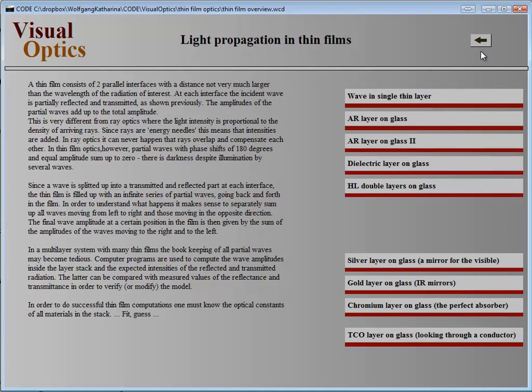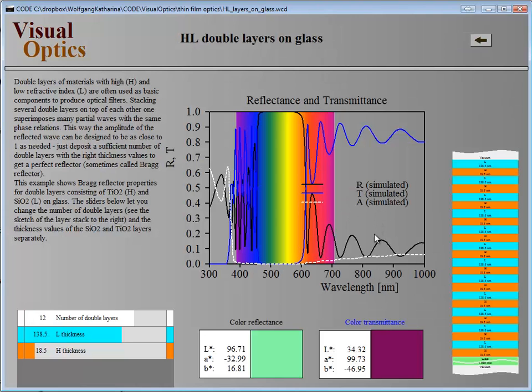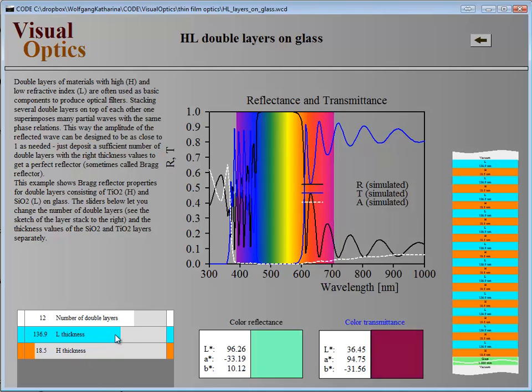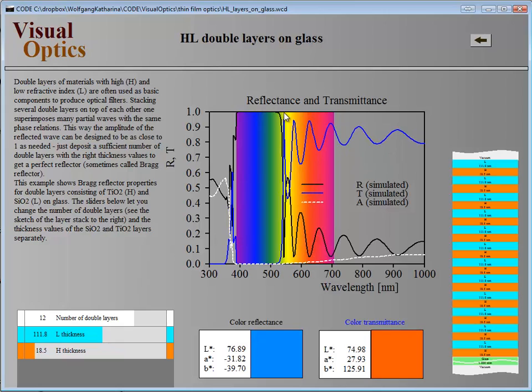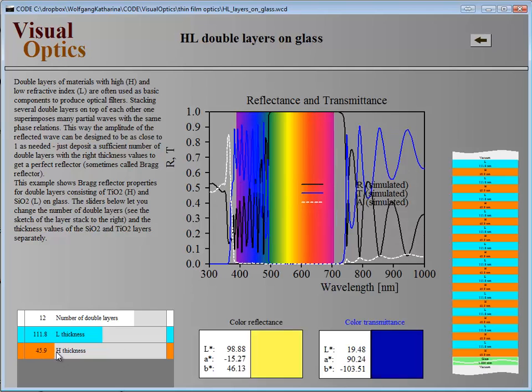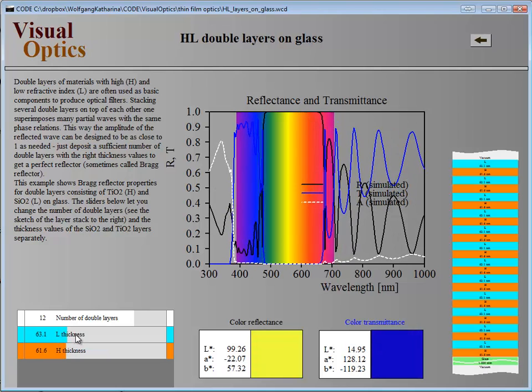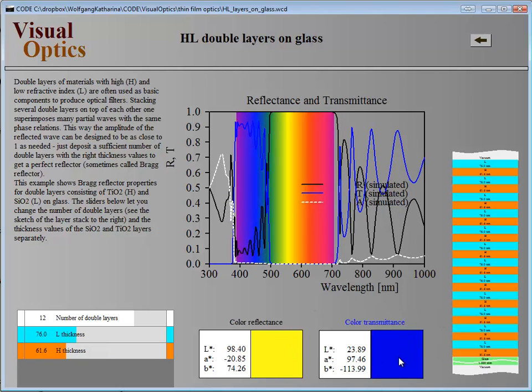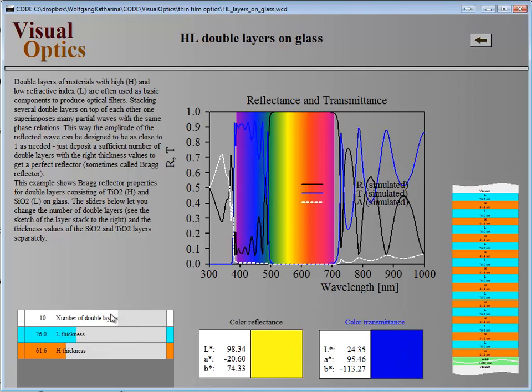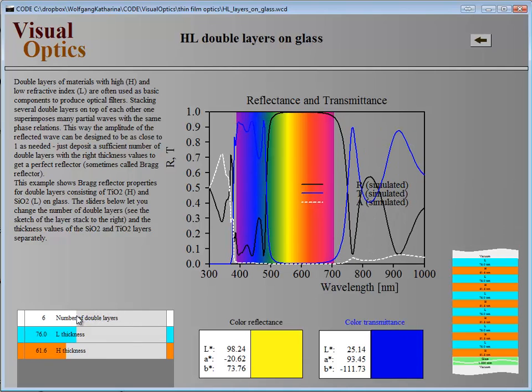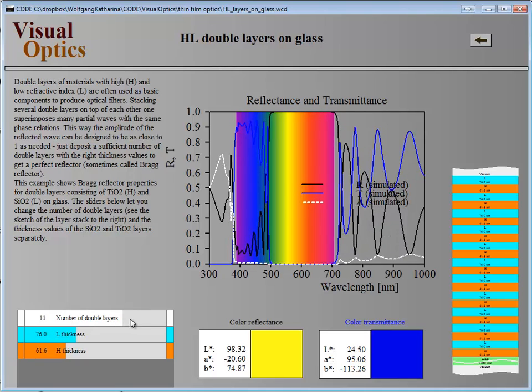Here's an advanced example - a double layer like they're used for optical filters. You have a sequence of low and high refractive index values. You can change the thickness and see what it means to be a Bragg reflector. It gives you a lot of numbers to play with and nice results. You can learn how it all works. You can even change the number of double layers interactively to see how optical filters are made.